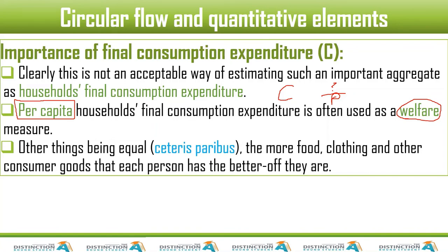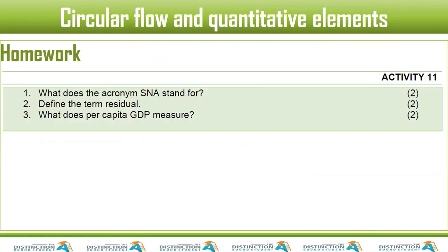Coming back — other things being equal, the more food, clothing, and other consumer goods that each person has, the better off they are. This is how per capita household final consumption expenditure tells us about welfare. How well-off people are can be measured using that per capita figure. This brings us to the end of the lesson.